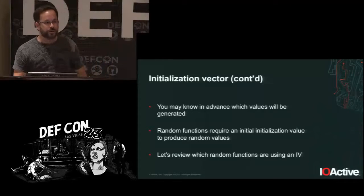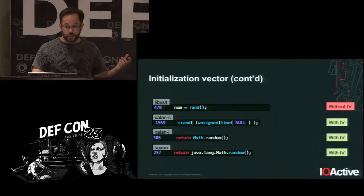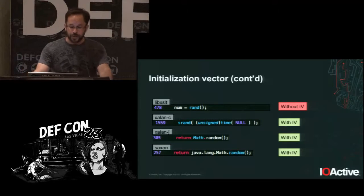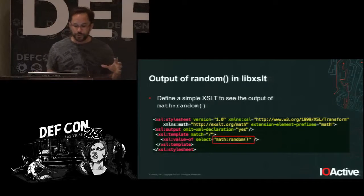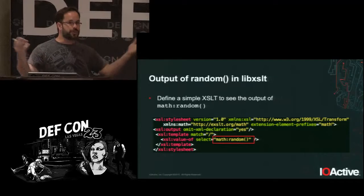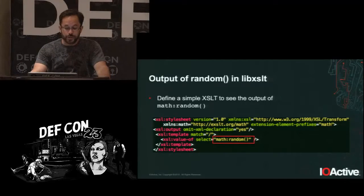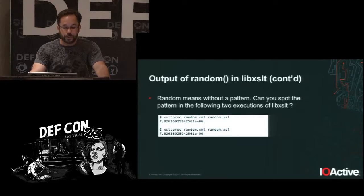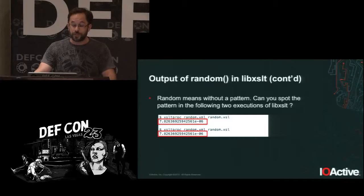Looking at which processors have a proper IV, there is only one that does not: libXSLT. This has been known since 2006. If you try to call the random function from libXSLT on the command line and execute it twice, you get the same number both times — you always get 7.82 as the first number every time you execute the random function.